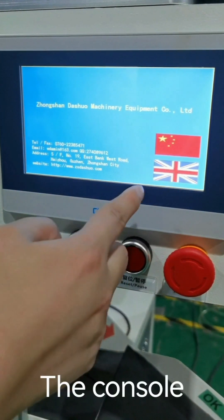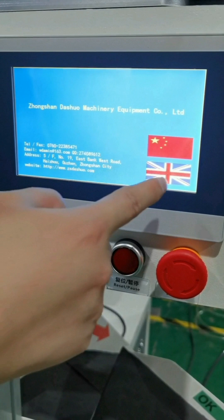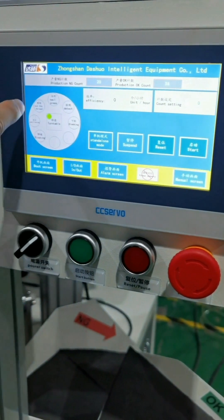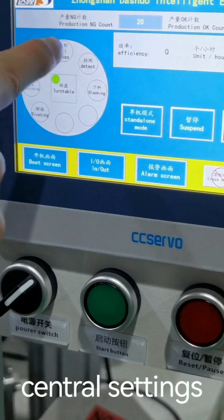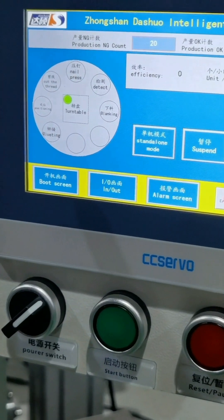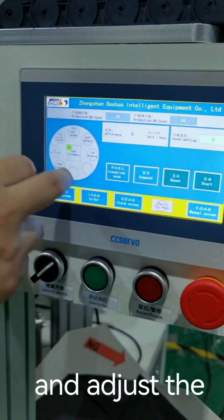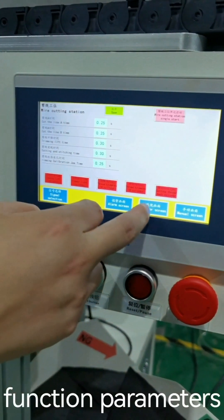The console supports both English and Chinese interfaces. These are the central settings for each unit. Click these buttons to enter the setting center and adjust the function parameters.